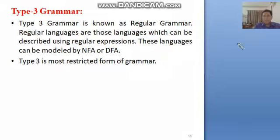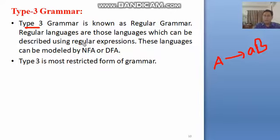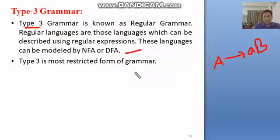Type 3 grammar is also known as regular grammar. Productions are of the form: terminal followed by non-terminal. There are two types of regular grammars: left linear and right linear. Regular languages are those which can be described using a regular expression, and these languages can be modeled by NFA or DFA. That was Chomsky Hierarchy — thank you very much.